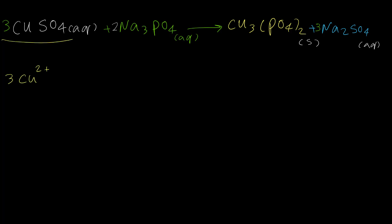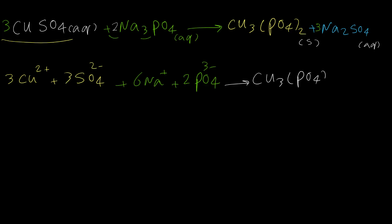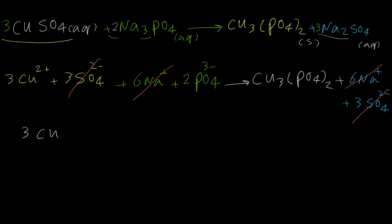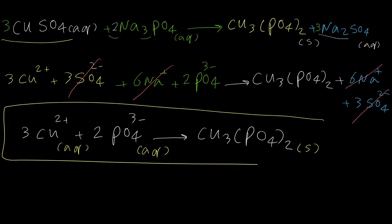For the ionic equation: we have three copper cations and three sulfate anions. For sodium phosphate with coefficient two: we have two times three equals six sodium, and two times one equals two phosphate. For the products, we leave copper phosphate as solid, and for sodium sulfate we write six sodium and three sulfate. Looking at this complete ionic equation, sodium and sulfate are spectator ions so we cancel them out. The net ionic equation is: 3Cu²⁺ (aq) + 2PO₄³⁻ (aq) → Cu₃(PO₄)₂ (s).